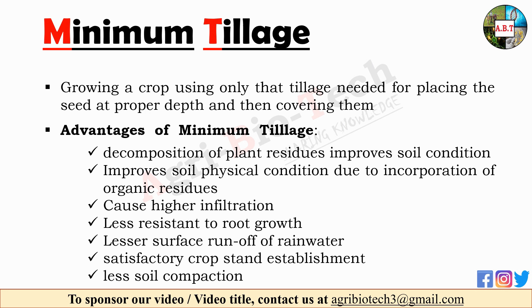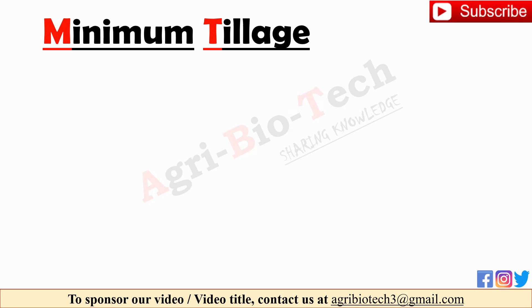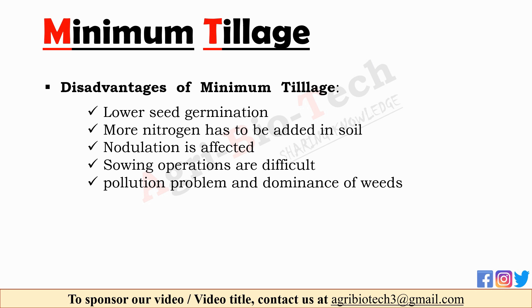Further advantages of minimum tillage include: less resistance to root growth due to improved soil structure; lesser surface runoff of rainwater; satisfactory crop establishment; and less soil compaction due to reduced movement of heavy tillage vehicles, with less erosion compared to conventional tillage. Disadvantages of minimum tillage include: lower seed germination; more nitrogen must be added as the rate of decomposition of organic matter is slow; nodulation is affected in some leguminous crops such as field pea and beans; sowing operations are difficult with ordinary implements; and continuous use of herbicides causes pollution problems and dominance of perennial problematic weeds.